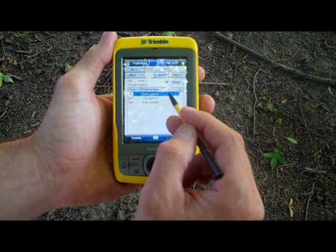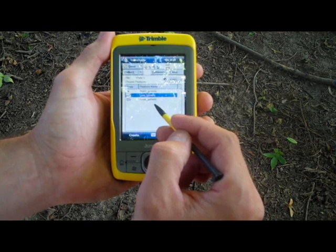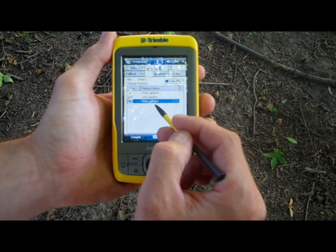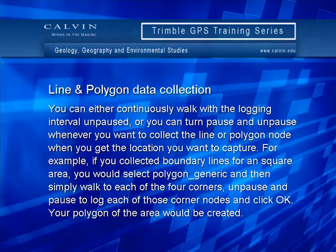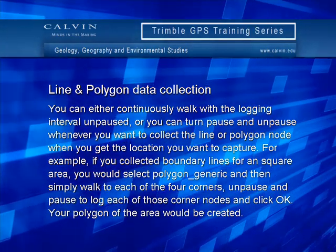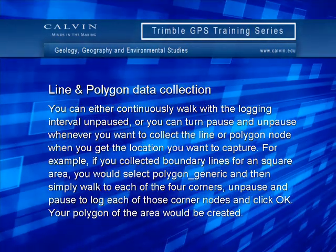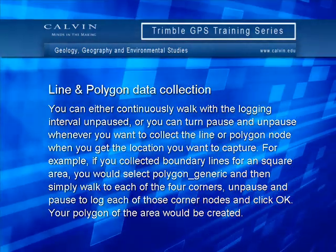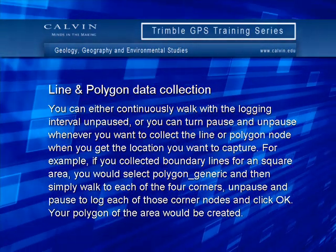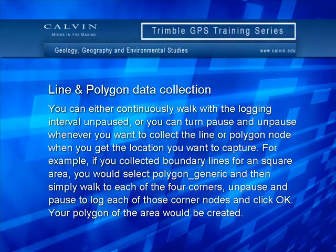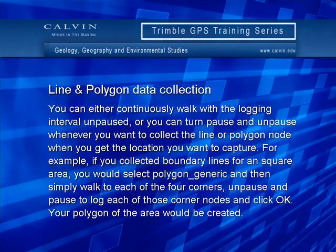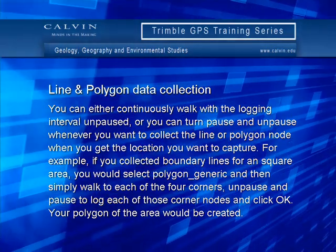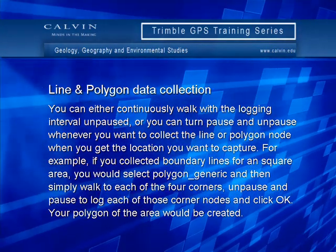Line and polygon feature collection works the same way, except logged intervals are considered points or nodes on the line. You can either continuously walk with the logging interval unpaused, or you can pause and unpause whenever you want to collect the line or polygon node when you get to the location you want to capture. For example, if you collect boundary lines for a square area, you would select Polygon Generic, and then simply walk to each one of the four corners, unpause and pause to log each of those corner nodes, and click OK. Your polygon of the area would be created.